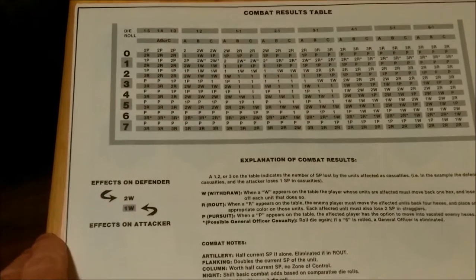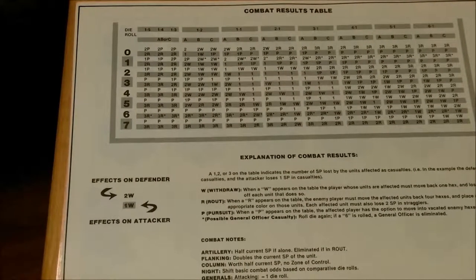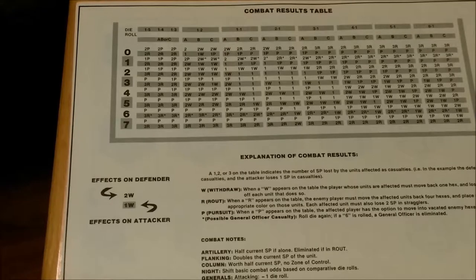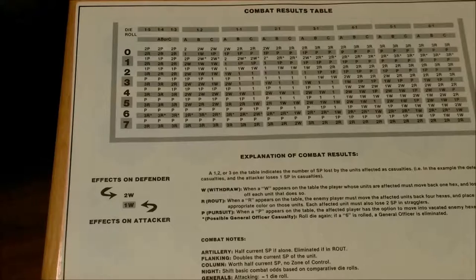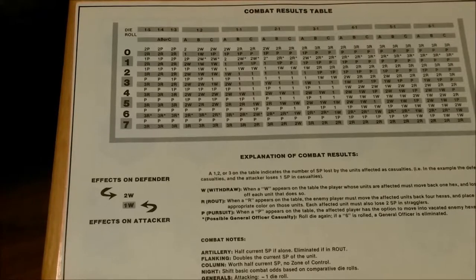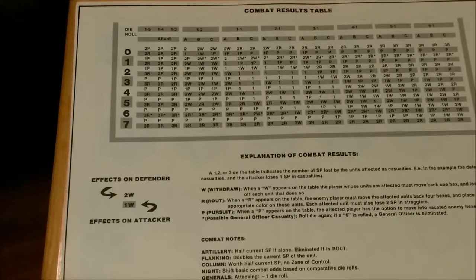On the back they have the combat results table reprinted. So as far as rules booklets, the rules booklet and the game charts, that's it for those components. Next I'll show you the strength record charts and the map board.